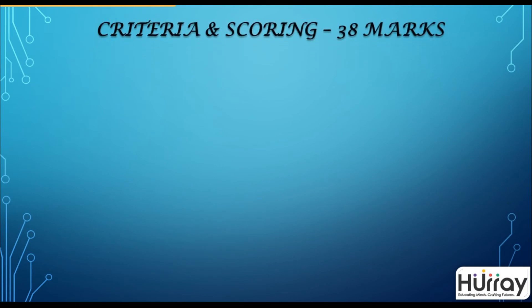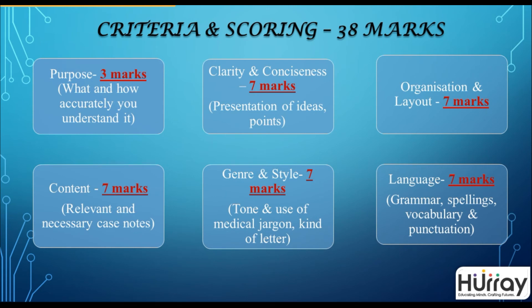Let's look at the criteria and scoring. You have a total of 38 marks for the writing, divided as follows: 3 marks for purpose — how accurately you understand and write the purpose in the first paragraph; 7 marks for clarity and conciseness — how well you present your ideas and points; 7 marks for organization and layout — the format of the letter; 7 marks for content — covering relevance and necessary case notes; 7 marks for genre and style — covering tone and usage of medical jargon depending on the type of letter; and 7 marks for language skills — covering grammar, spellings, vocabulary and punctuation.